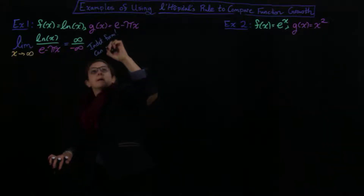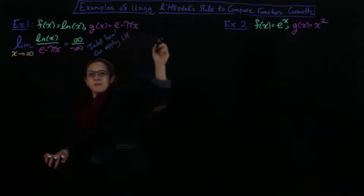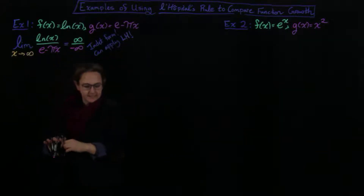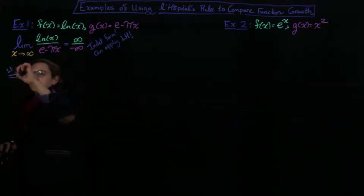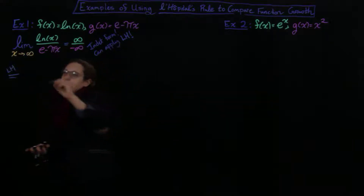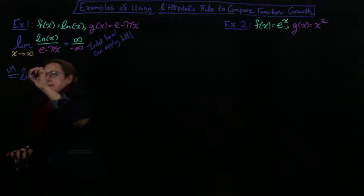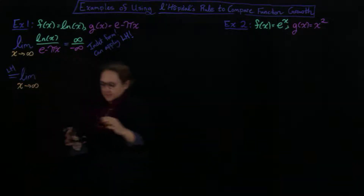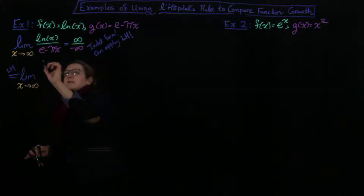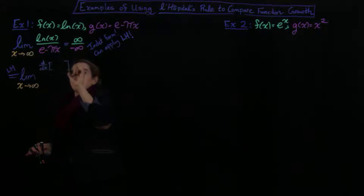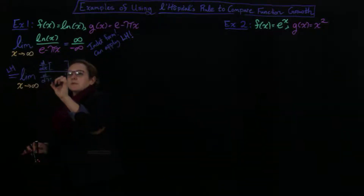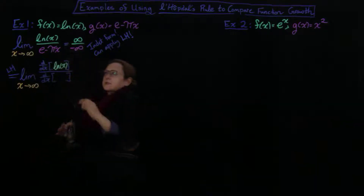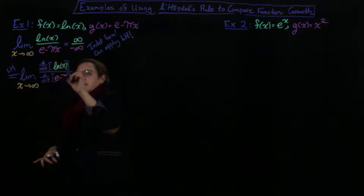We can apply L'Hôpital's Rule, abbreviated LH. Remember to keep writing the limit every time — you should write the limit until you've actually taken it, just so you don't make a mistake. We're still taking it as x goes to infinity. The key thing to remember is to take the derivatives of the top and the bottom separately — no quotient rule. I'm taking the derivative of the natural log of x on top and the derivative of e minus pi x on the bottom.